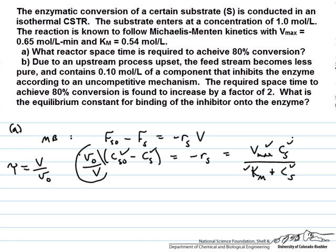The units here are pretty straightforward—everything is in moles, liters, and minutes. So finally we can solve for V0 over V, take the reciprocal of that number, and that should give us a tau of around 4.6 minutes.